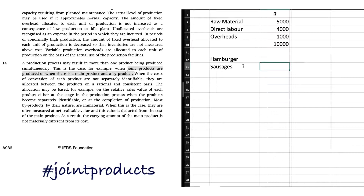Now what IFRS tells you to do in paragraph 14 is: you're going to incur costs in the production process and you just need to split those costs when the result of the production process is a joint product — two or more products. All IFRS tells you is just find some logical way to do that. IFRS really doesn't make this complicated — take that 10,000 in our example and find a logical way to split it.